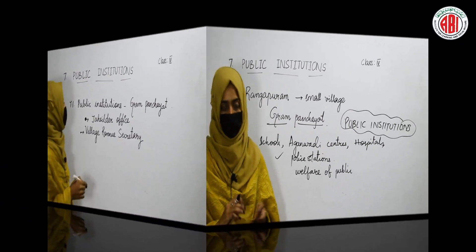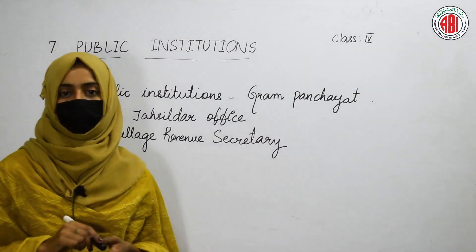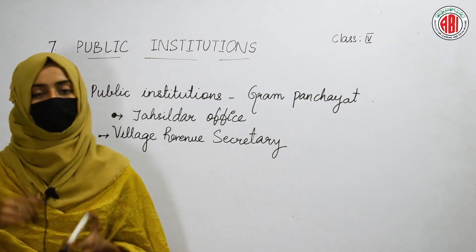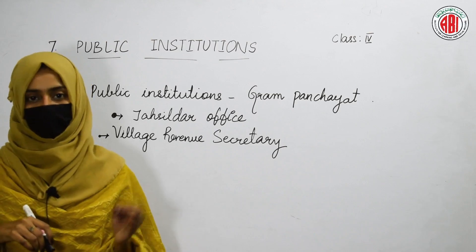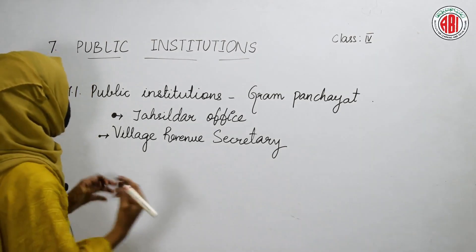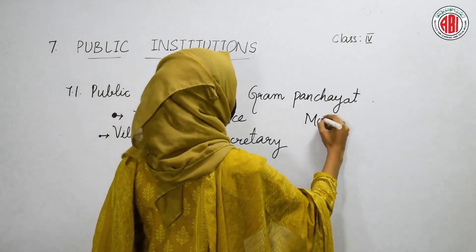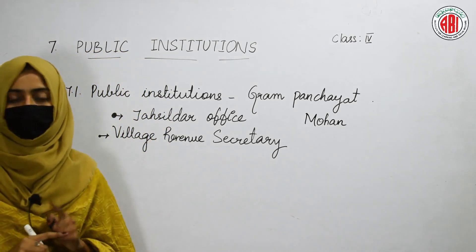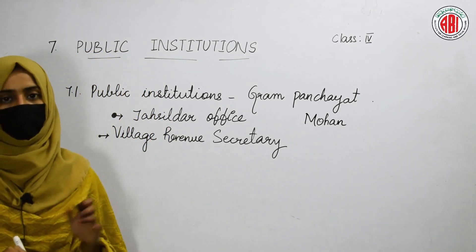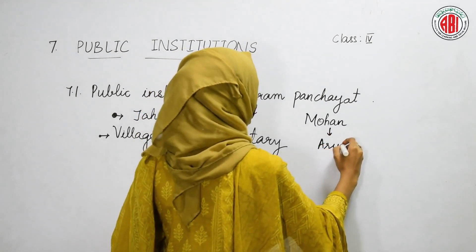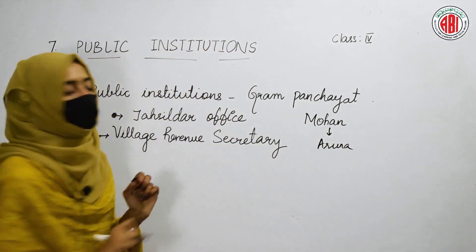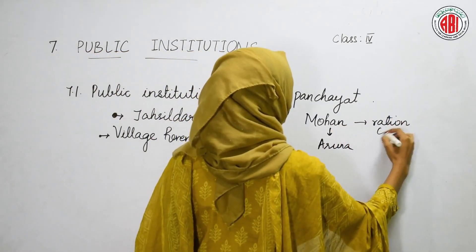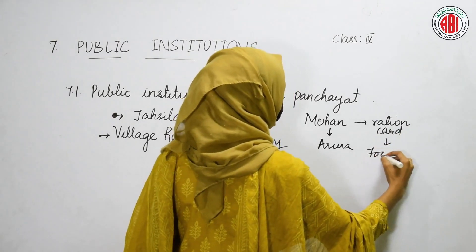Let us discuss about public institutions and Gram Panchayat with an example. One person lives in a village — his name is Mohan. He lives with his wife and children, and one of his daughters is named Aruna. Mohan did not have his own ration card, which can also be called a food security card.